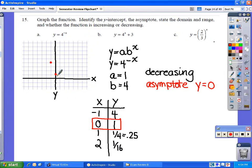We'll start with the points negative one comma four, zero comma one. At one, we're at one-fourth, and at two, we're at one-sixteenth, so we're getting closer and closer to that x-axis, we never actually reach it.